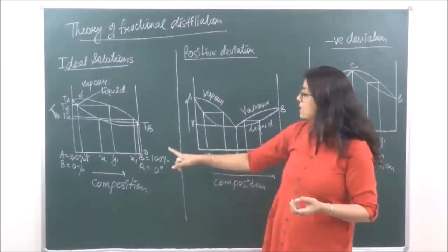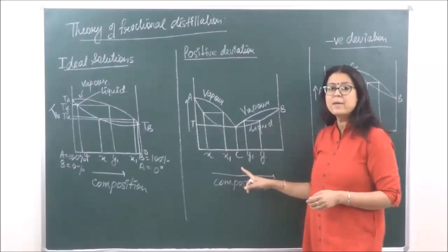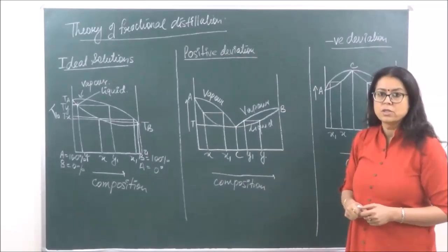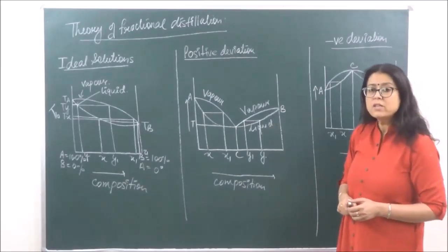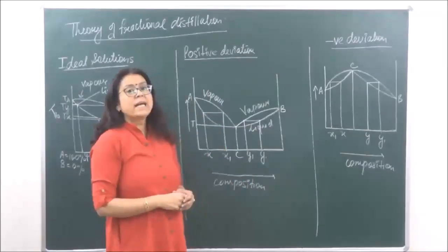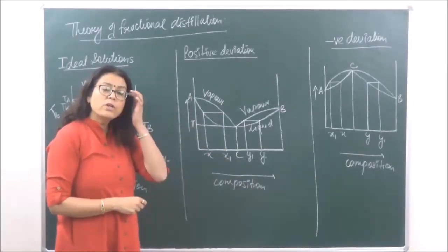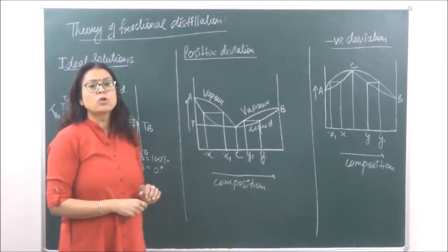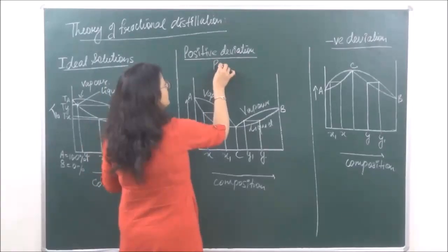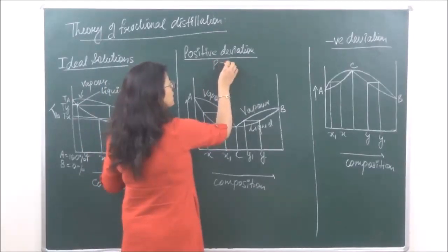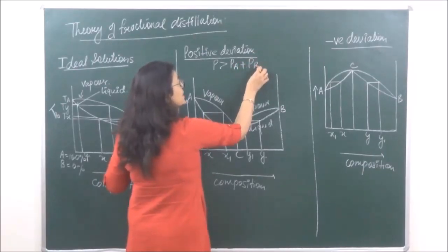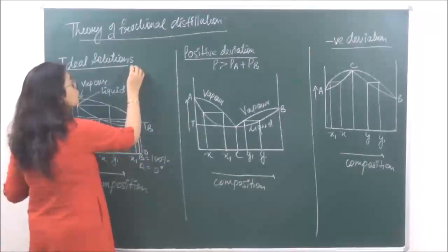Let's consider the second type of graph, which is the positive deviation. In positive deviation, as we have already studied according to Raoult's law, the total pressure is going to be greater than the sum of PA and PB. For ideal solutions, total pressure is equal to PA plus PB, and for negative deviation, the total pressure is less than PA plus PB.